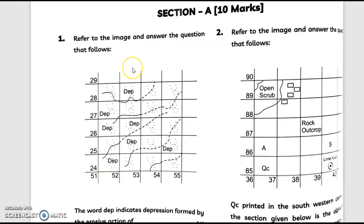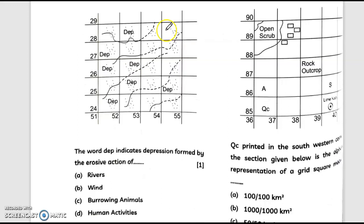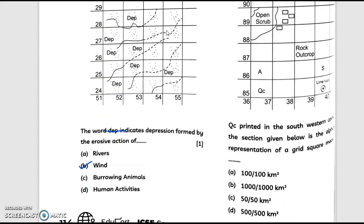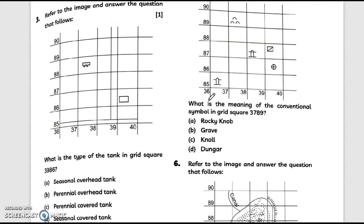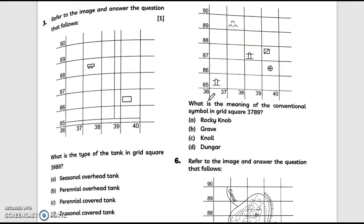Now refer to the image and answer the question that follows. The word 'depth' indicates depression formed by the erosive action of... answer is option B, that is wind. Moving to question number three - I am not doing question number two because it is not visible. Refer to the image and answer the question that follows. What is the type of tank in grid square 3986? Answer is option C, that is perennial covered tank.